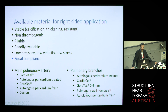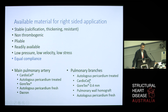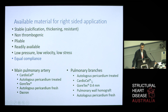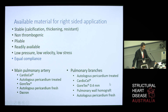You also have the pulmonary wall homograft. When the patients are a bit older — from infancy to adult life — you can use CardioCell. You can use all of these except for the autologous pericardium fresh, which is difficult to work with.